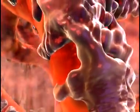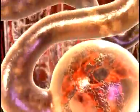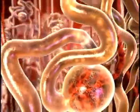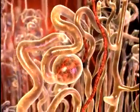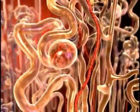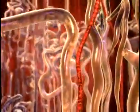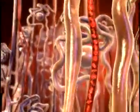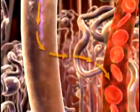The filtrate then diffuses across Bowman's space and into the tubule system of the nephron. In the tubules, some substances are added to the filtrate as part of the urine formation, and some substances are reabsorbed out of the filtrate and back into the blood.